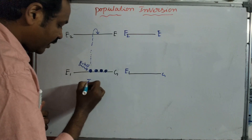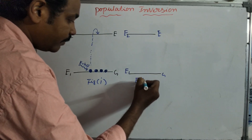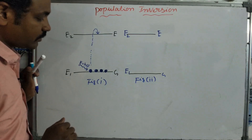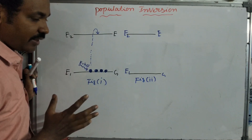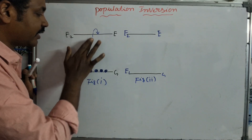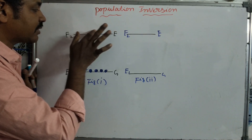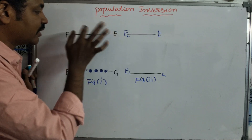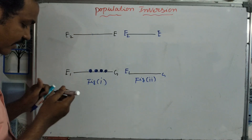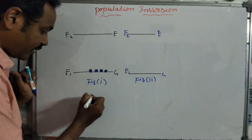Looking at Figure 1 and Figure 2: the equilibrium state is in this position. The photon is in the excited state. Now we will talk about the energy level.